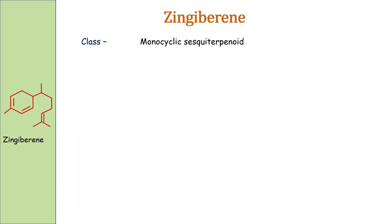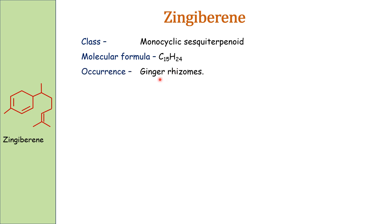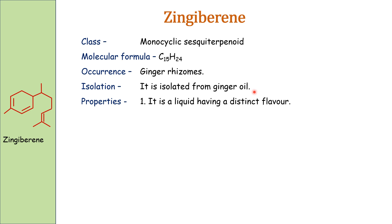Gingivirine is a monocyclic sesquiterpenoid. Monocyclic means it contains one ring, and sesquiterpenoid means it contains 15 carbon atoms. Its molecular formula is C15H24. It occurs in ginger rhizomes and is isolated from ginger oil.